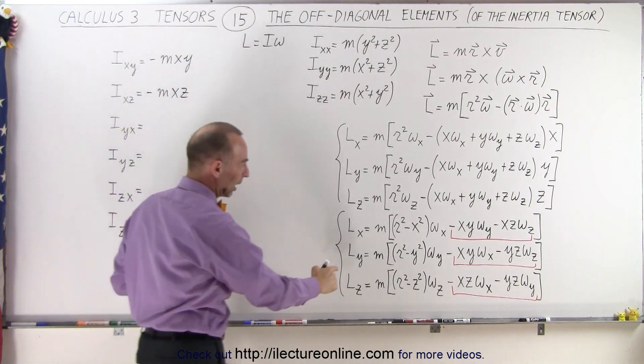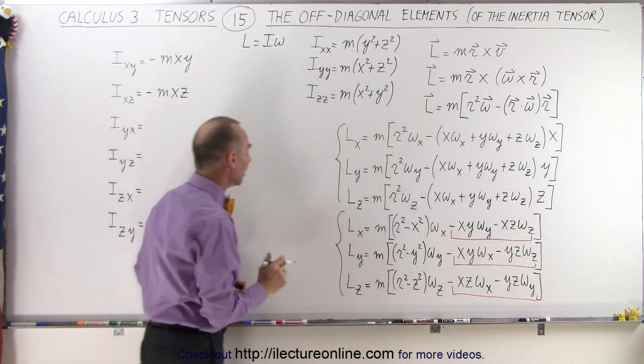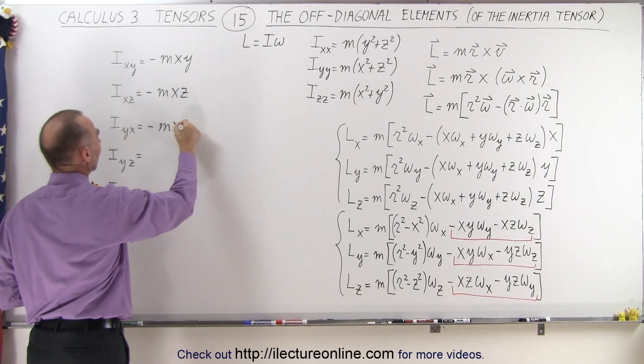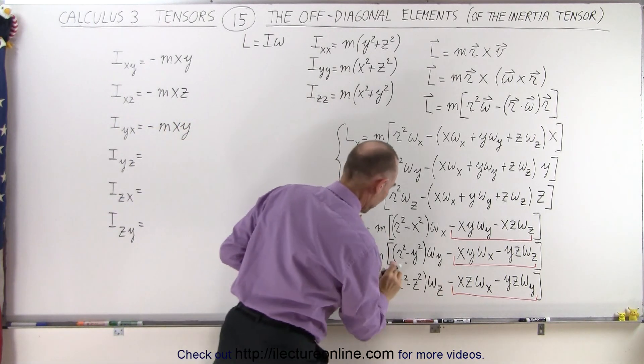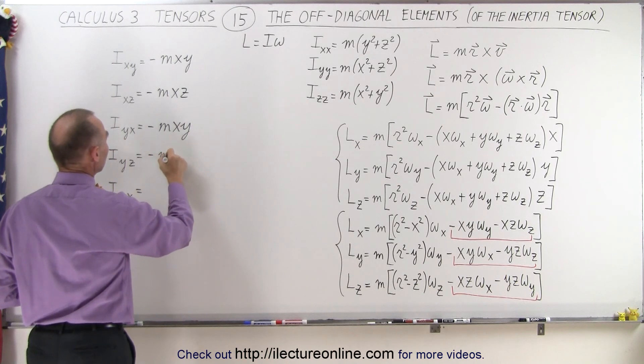Then we drop down and we go to l sub y. We take this term so the mass times the minus xy. For this term, minus m times xy. And here we get m times the minus yz. That becomes a minus m times yz.